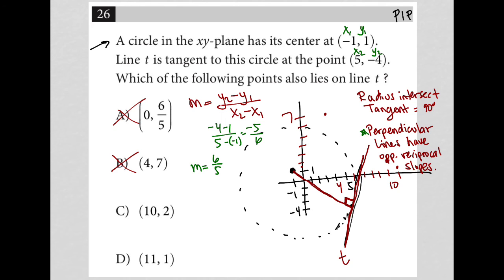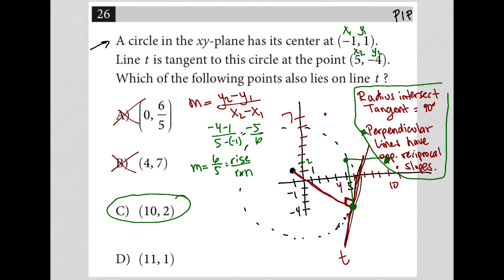Now knowing I'm at the point 5, negative 4, how do I get to the next point? The slope is rise over run, so I rise 6 units, which gets me to positive 2 — I'm at 5, 2. Then I run 5 units, which takes me to 10, 2. That gets me right to answer choice C. Understanding this geometric relationship is extremely important, and if you played around with Desmos you'd figure out the best answer as well.